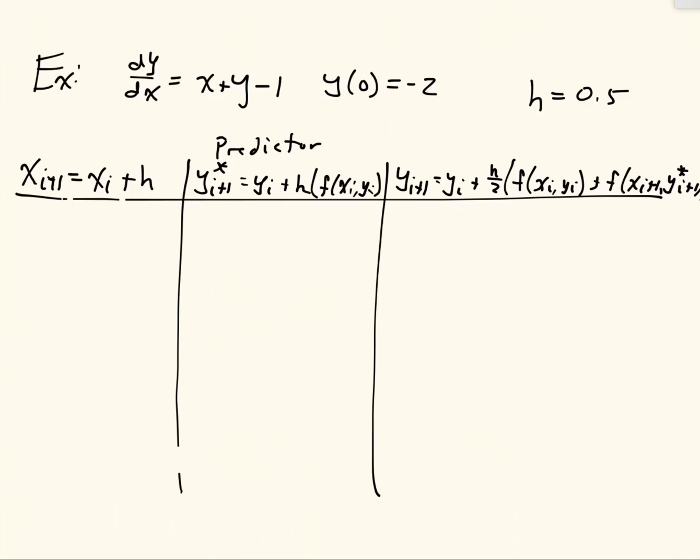You'll notice that the predictor step is exactly the same as Euler's method, and then we have this additional corrector step on top of it. So we always start off these tables with initial condition. So our initial condition is x_1 equals 0 and y_1 equals 2. I'm going to change that because in my notes I have our initial condition as just 2.